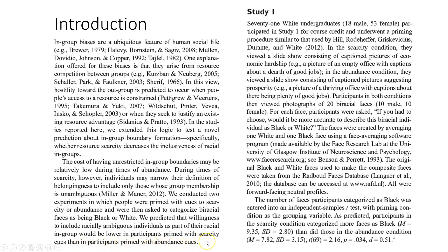So what they predicted is: if participants are white, they would be more likely to include biracial people in their own group and say 'that's white enough' if there was abundance. But if there was scarcity, they would say 'that person is not white, that person is black.' Let's see what actually happened.